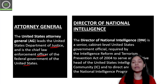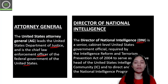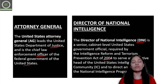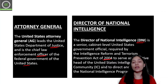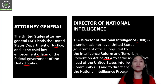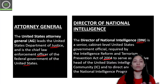The other body is the Director of National Intelligence, abbreviated as DNI. That person is the Senior Cabinet Level United States Government Official required by the Intelligence Reform and Terrorism Prevention Act 2004. The DNI serves as the Executive Head of the United States Intelligence Community and oversees the National Intelligence Program.